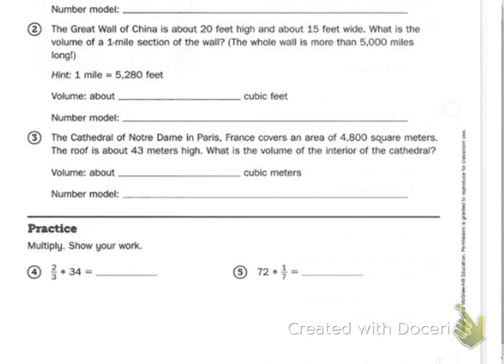Complete 2 and 3 on your own. Two says the Great Wall of China is about 20 feet high and about 15 feet wide. What is the volume of a one-mile section of wall? The whole wall is more than 5,000 miles long. Hint, one mile equals 5,280 feet.